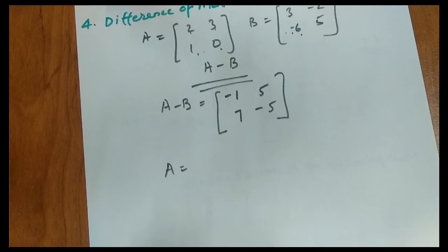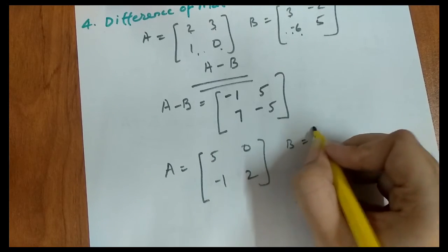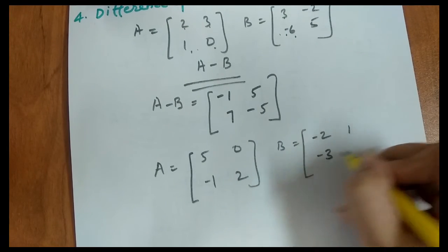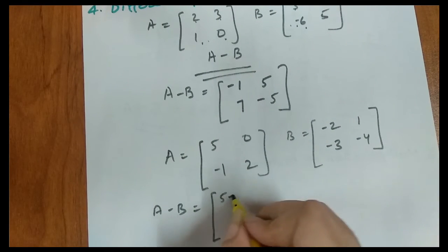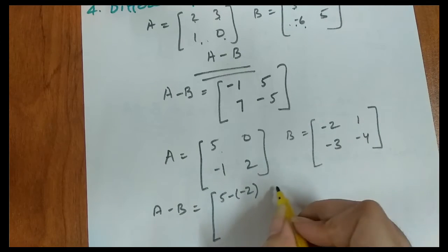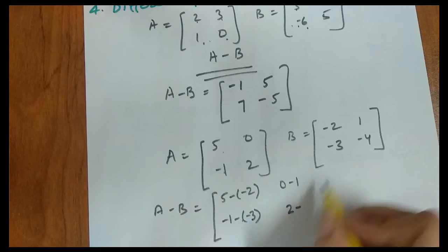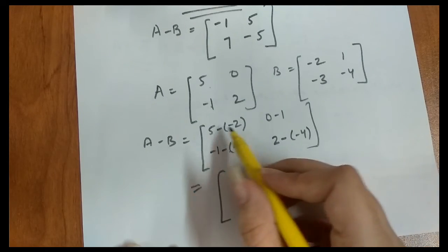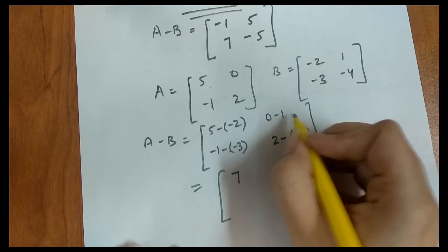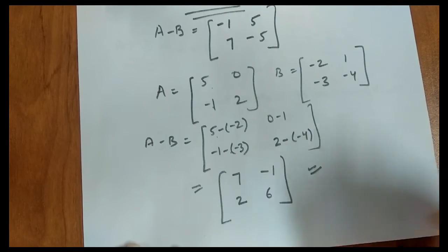Let me take another example with more negative elements to make it clear. Let A = [5, 0, −1, 2] and B = [−2, 1, −3, −4]. We find A minus B: 5−(−2) = 7, 0−1 = −1, (−1)−(−3) = 2, 2−(−4) = 6. So A minus B = [7, −1, 2, 6].